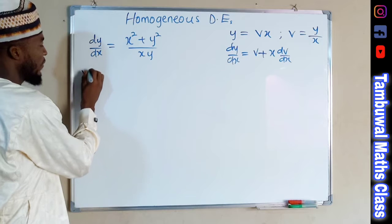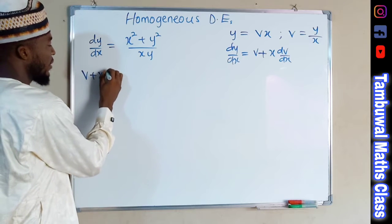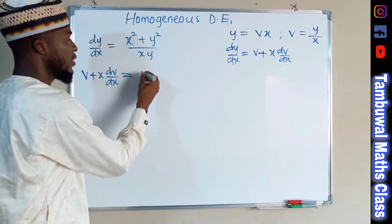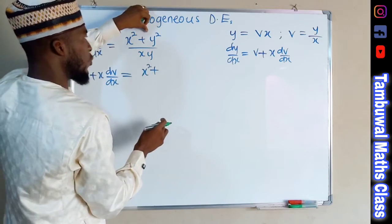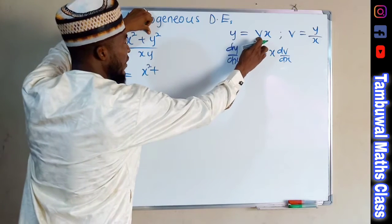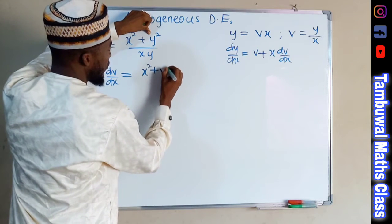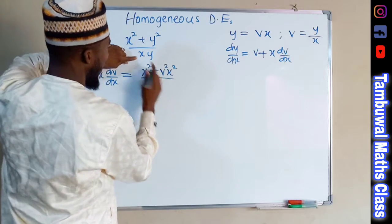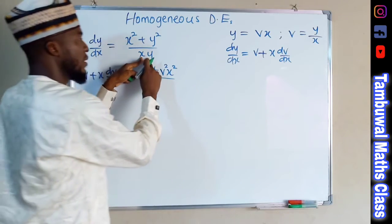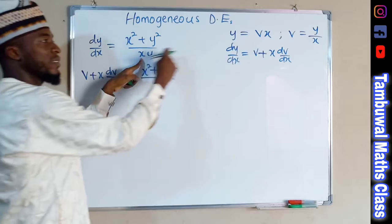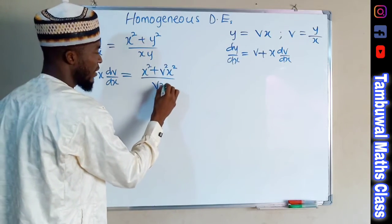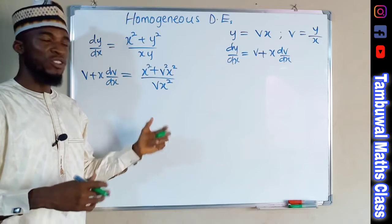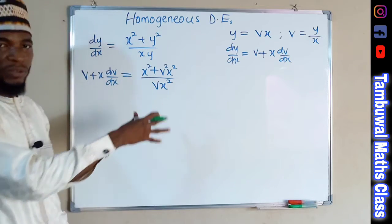Wherever you see dy over dx in your equation, replace it with v plus x dv over dx, and replace y with vx. On the right-hand side we have x squared plus y squared — but y equals vx — so we have v squared x squared, divided by x multiplied by y, which is x times vx, giving vx squared.